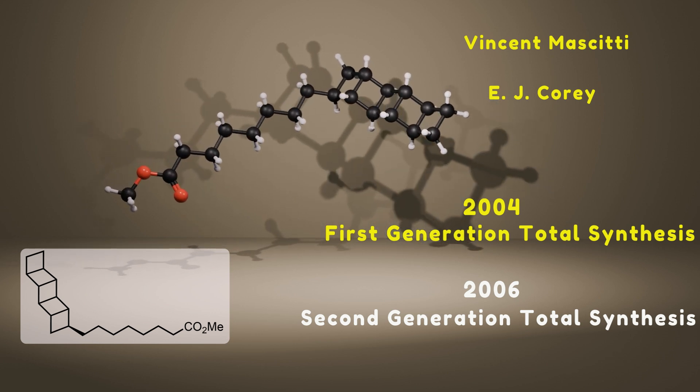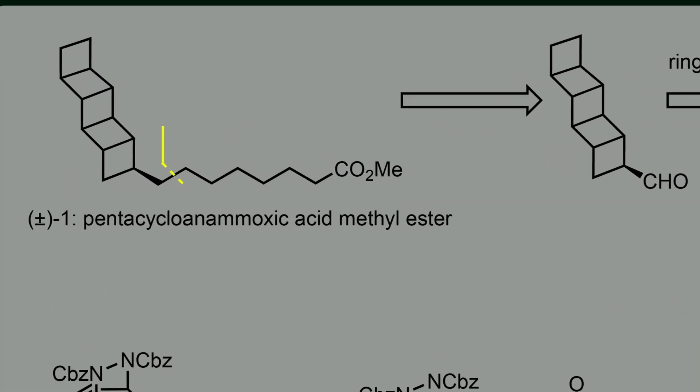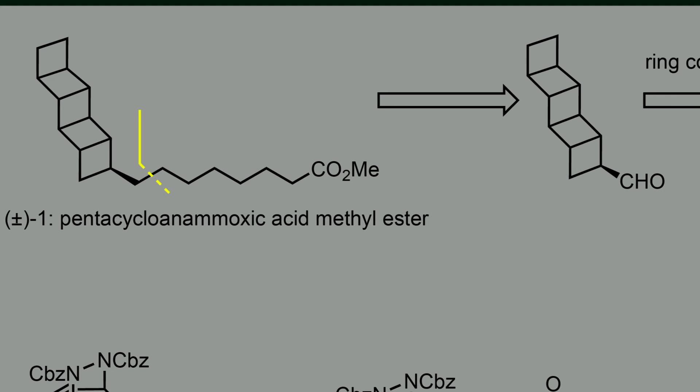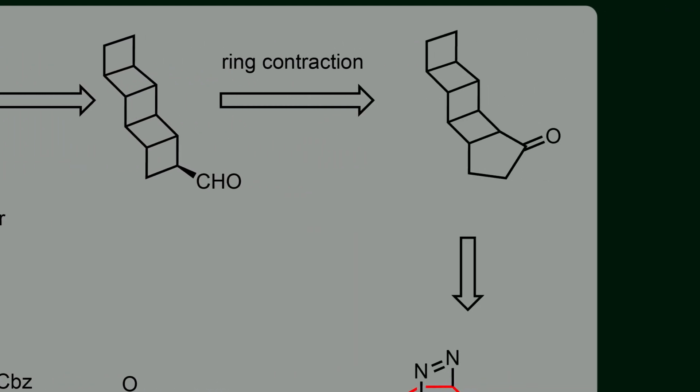Now let's analyze the first synthesis approach. First, look at the retrosynthetic analysis. It begins with disconnection of the acyclic tail of the molecule, suggesting this aldehyde which can be envisioned as the product of ring contraction of cyclopentanone.